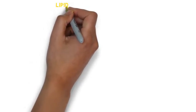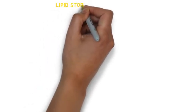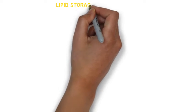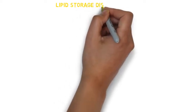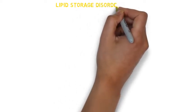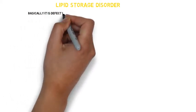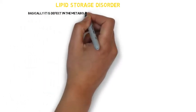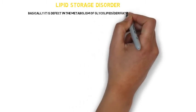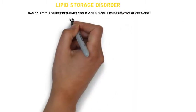Today we will be studying about the lipid storage disorders. In this video we will see the mnemonics about lipid storage disorders. Lipid storage disorder is basically the defect in the metabolism of glycolipids. There are three main types of glycolipids.